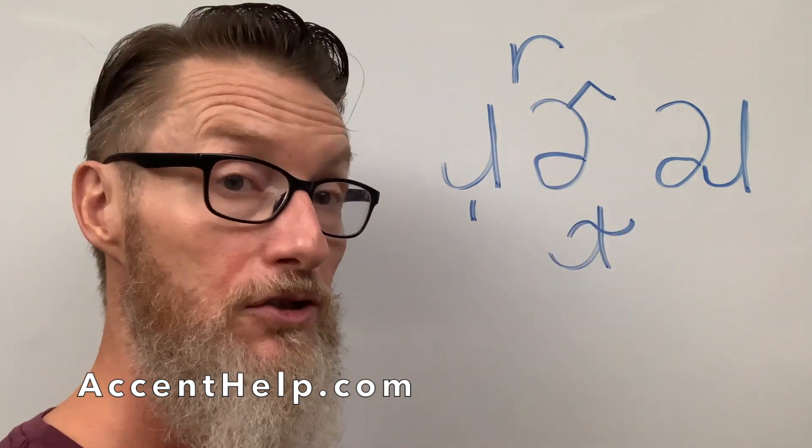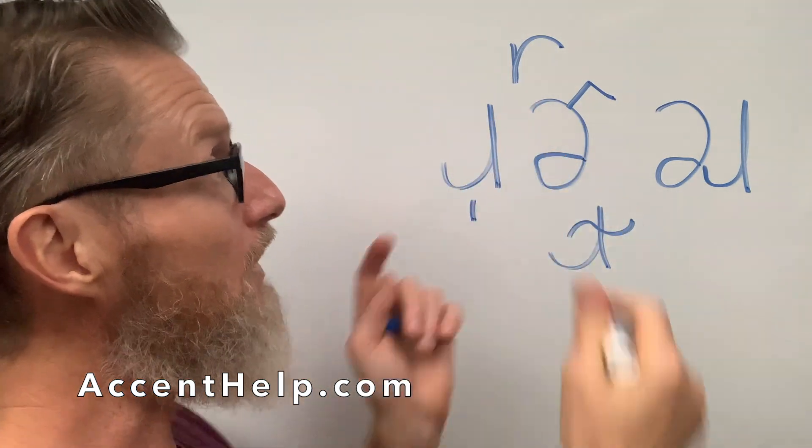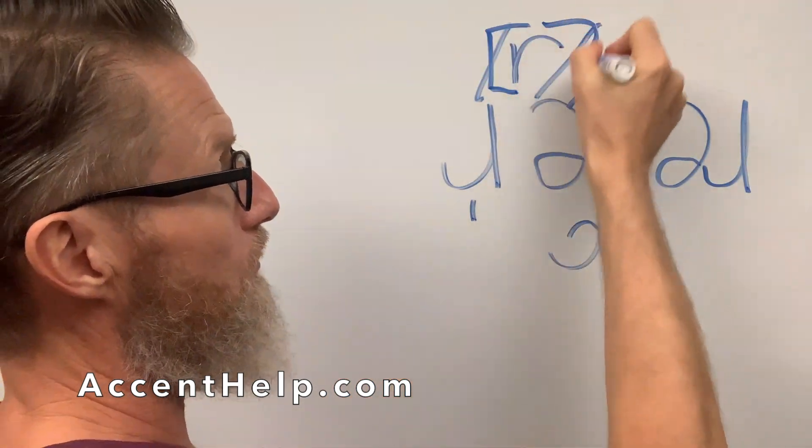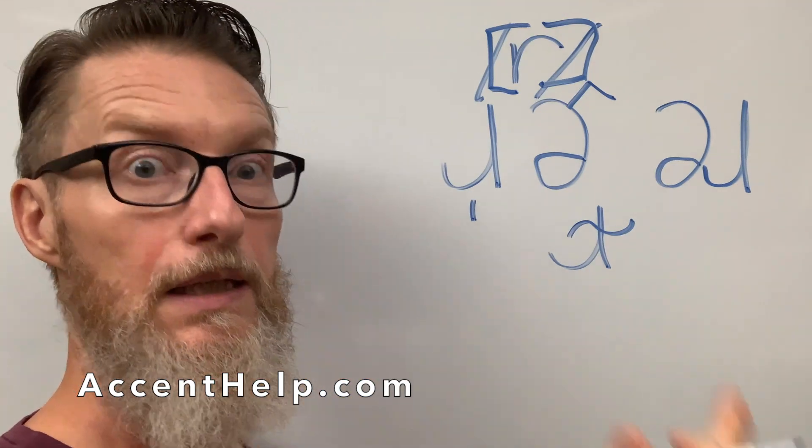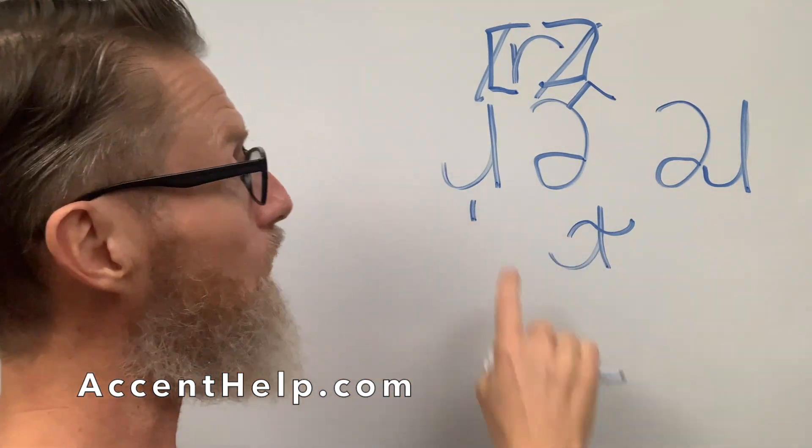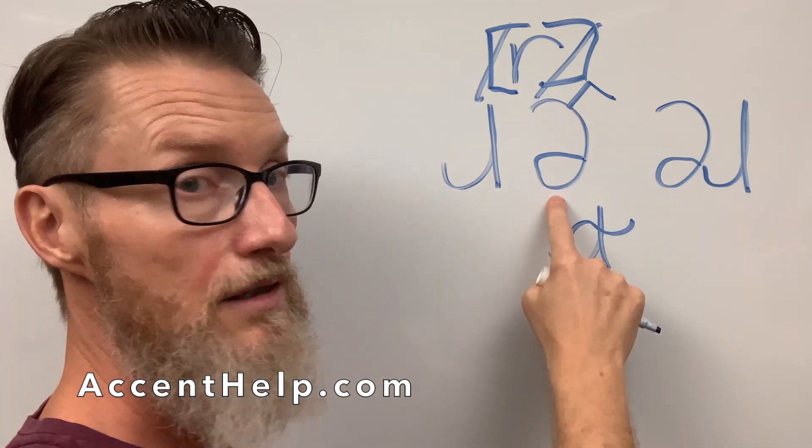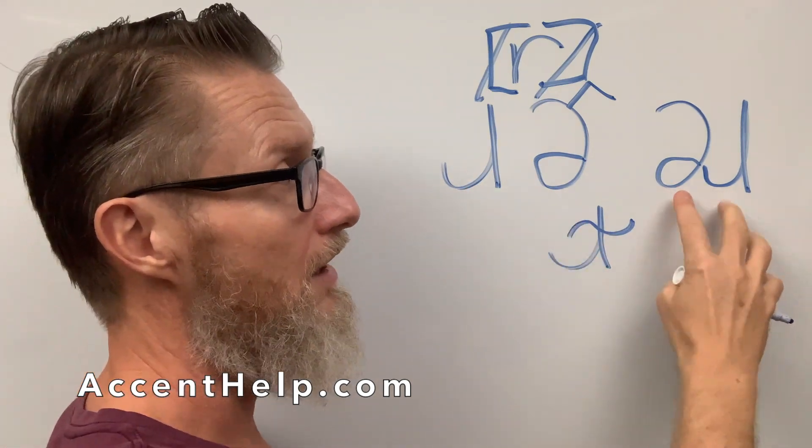So, in broad transcription, this just basically means, well, that's roughly an R, but when you get to narrow transcription, that means precisely it is this R. It is the trilled R, whereas this one is the R, and this one is the R, and this one is the R.